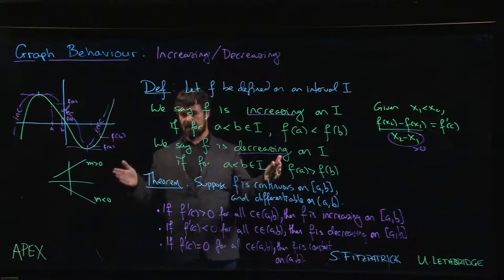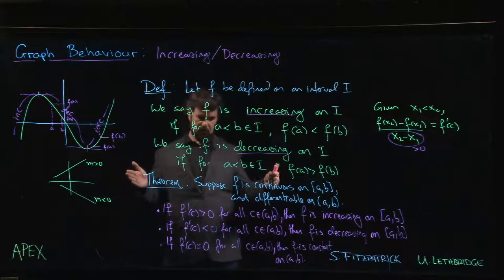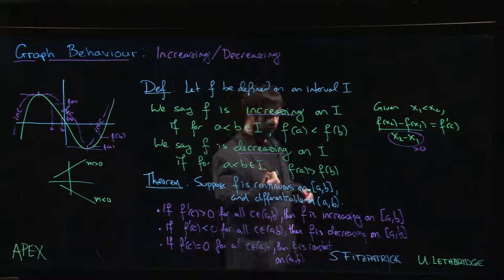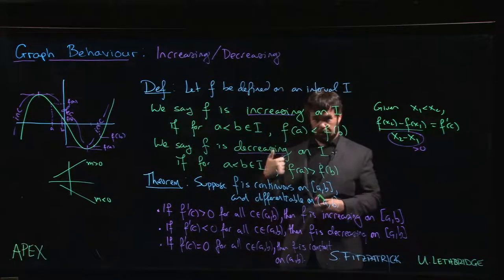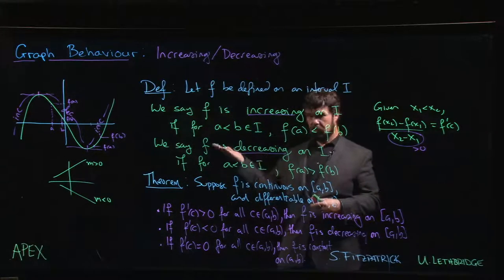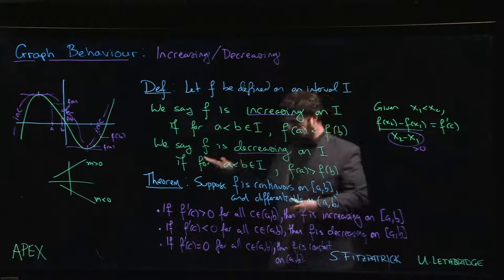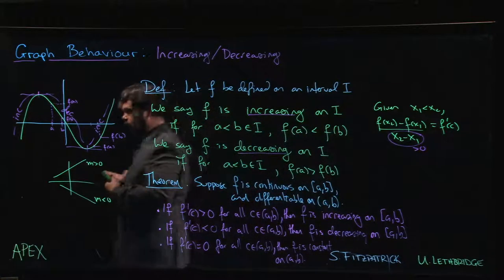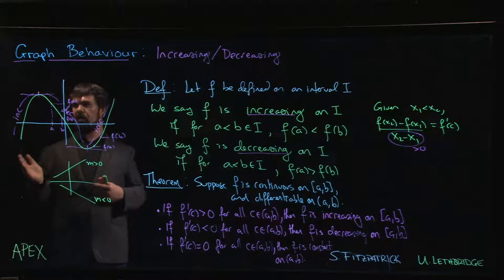It's pretty rare that it's going to be identically zero over an interval. Chances are it's just going to be zero at a single point, and we know exactly what those points are where the derivative is zero - they're critical points. So the critical points, those are going to be the points where we see this transition from increasing to decreasing.